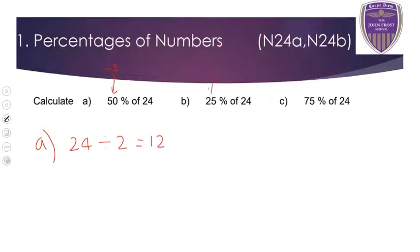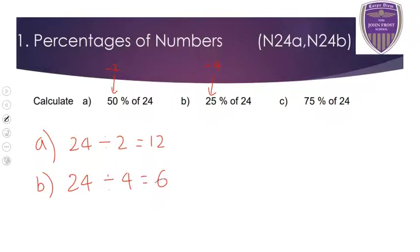For question B, 25%. To work out 25%, you divide by 4, or you halve it twice. So 24 divided by 4 is 6. Or that's the same as doing 12 divided by 2 — if 50% of 24 is 12, then 25% is 6.